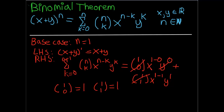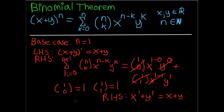y to the 0 is 1, and x to the 1 minus 1, which is x to the 0, is just equal to 1. So what we're left with is the right hand side equal to x to the first power plus y to the first power, which is just x plus y. Our base case therefore checks out, and we are ready to make our inductive hypothesis.